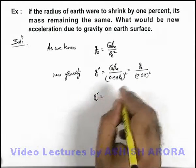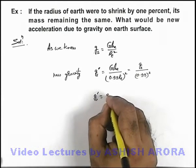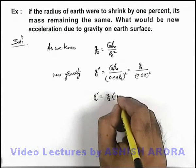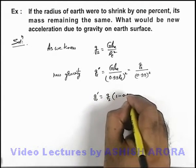If you wish to calculate its value, on simplifying g' = g(1-0.01)^(-2).